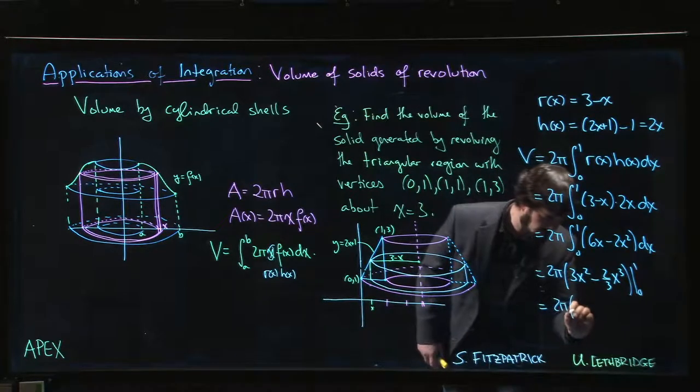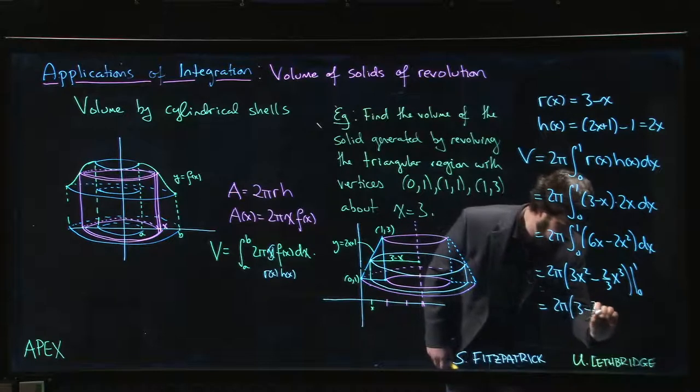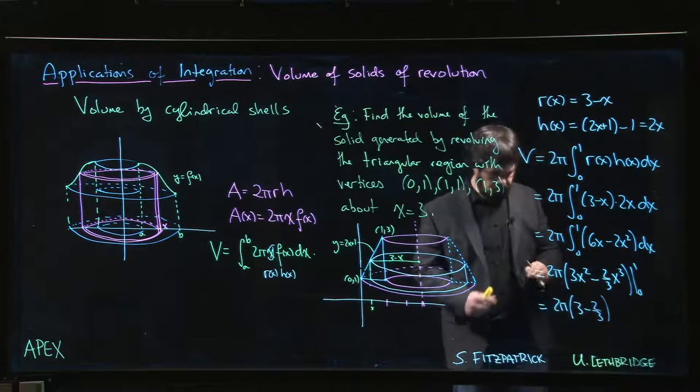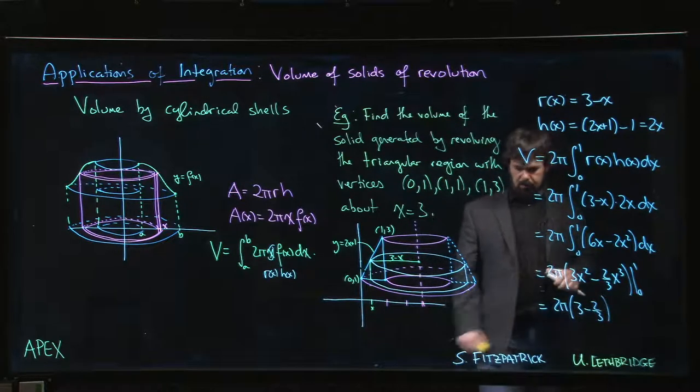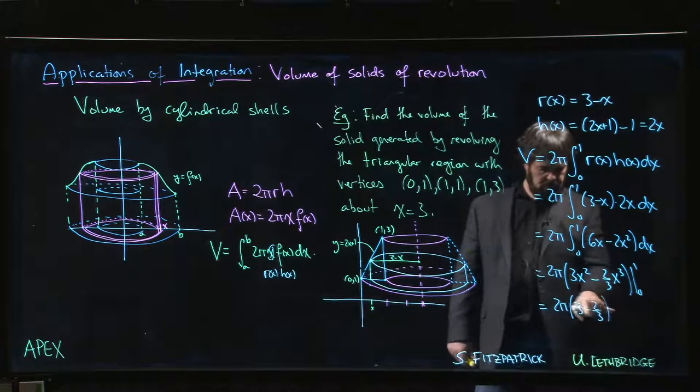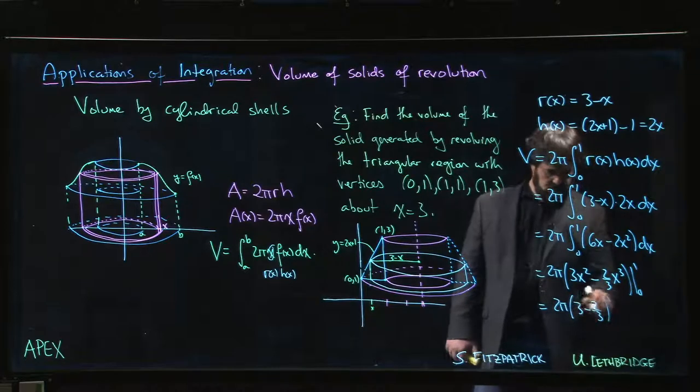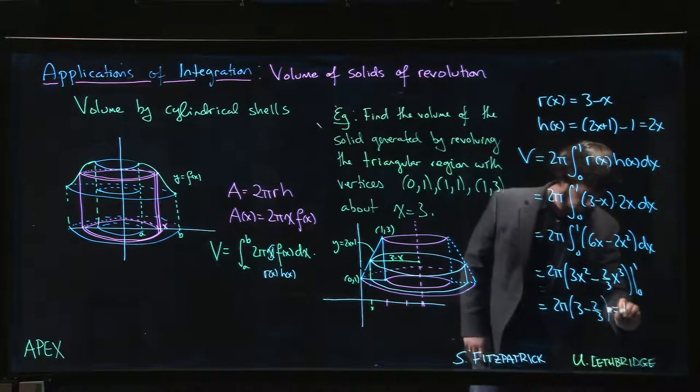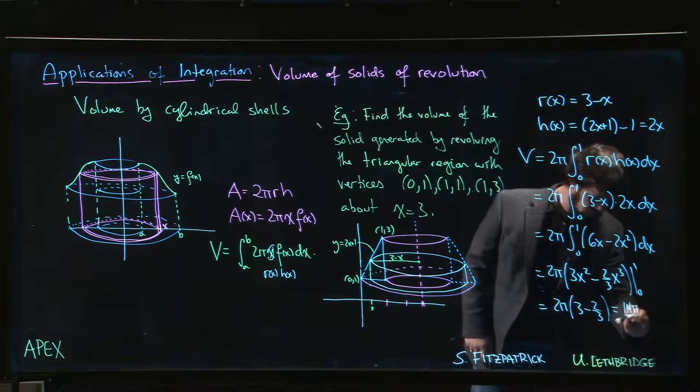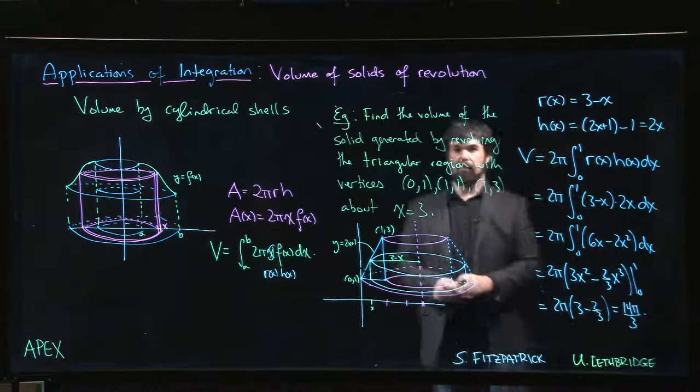We get 2 pi times 3 minus 2 thirds. So 3 is 9 over 3 minus 2, so 7 over 3 times 2. We get 14 pi over 3 for our answer.